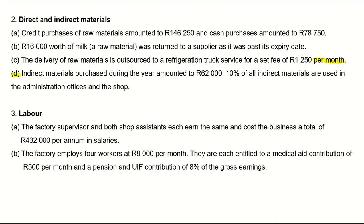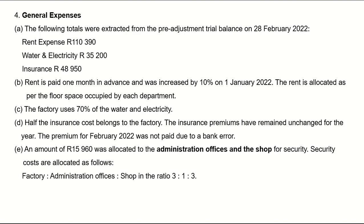I'll skip section B for now — it covers factory employees (direct labour) — and move straight to expenses. From the pre-adjustment trial balance on 28 February 2022: rent expense is 110,390; water and electricity is 35,200; insurance is 48,950. Rent is paid one month in advance, and rent was increased by 10% on 1 January 2022 — which changes everything. Rent is allocated according to floor space occupied by each department.